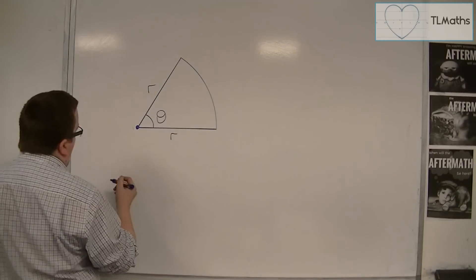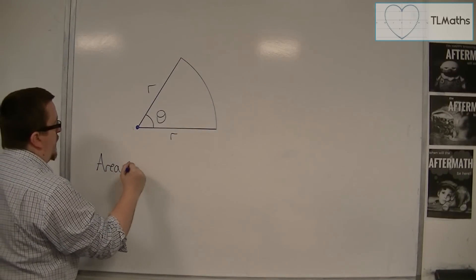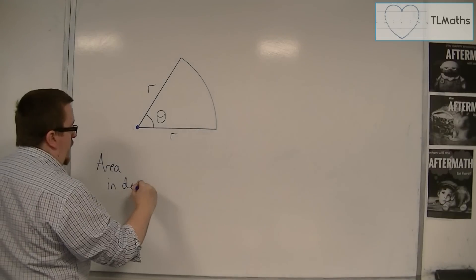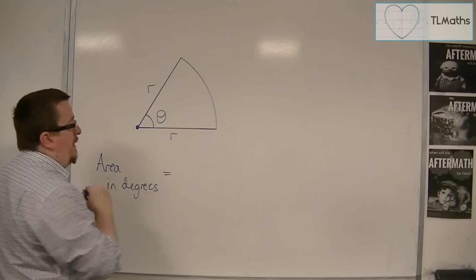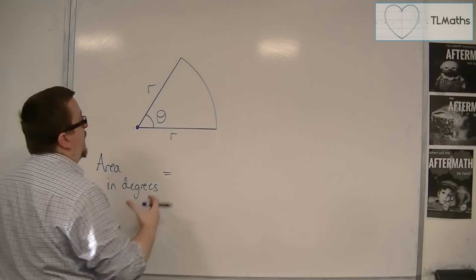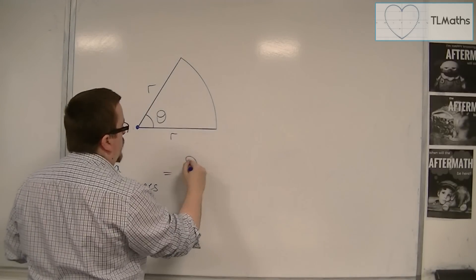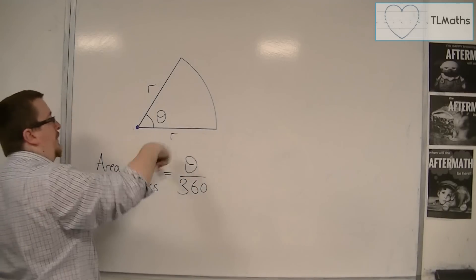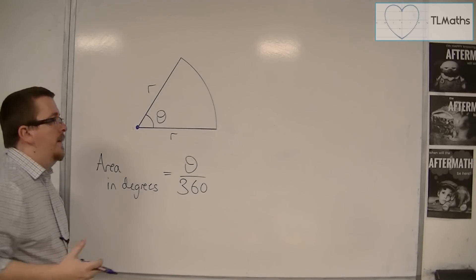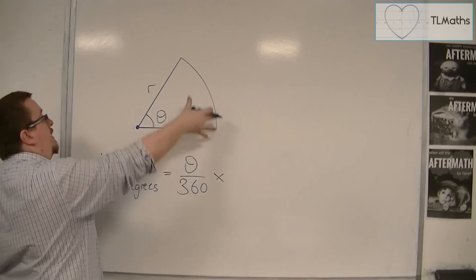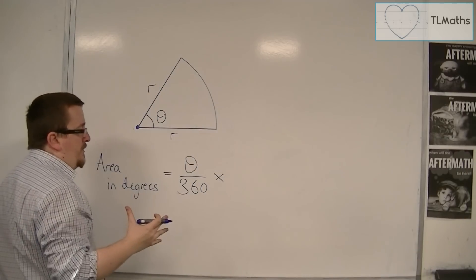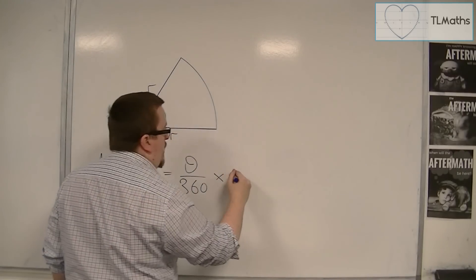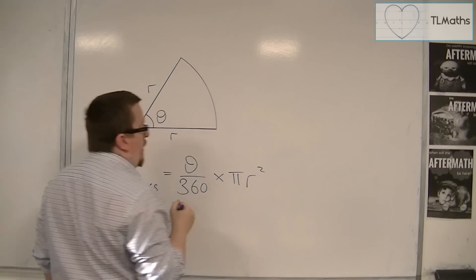If I was working out the area of a sector in degrees, I would use a similar method. I'd say, I want this angle in degrees as a fraction of the whole, so of the 360, and that is the fraction of the area of the whole circle that I want. So I want the area of a circle to be there, pi r squared.